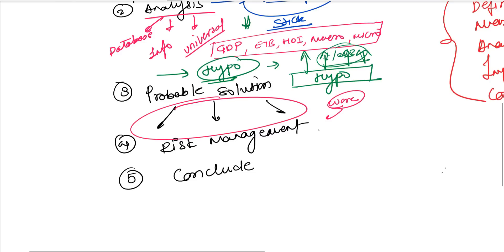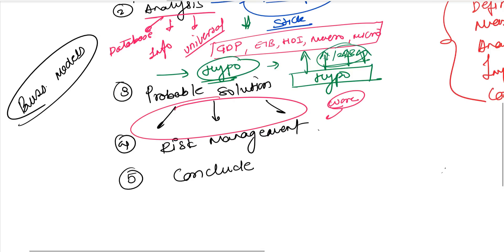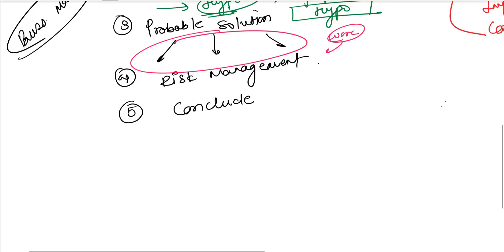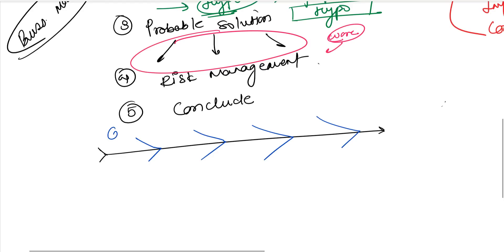When you do the analysis or go ahead with the probable solution, I would urge you to introduce some business models. I'll be making a separate video on business models, but for now here's something handy. If you're working on a case study with a lot of problems and need to come up with solutions, you can draw or discuss the Ishikawa model, also called the Fishbone model, which is a root cause analysis. Here you have all the causes and then the solutions — cause, solution, cause, solution — rather than dumping all causes and all solutions at once.